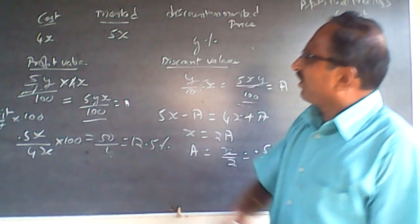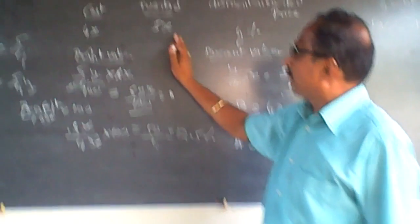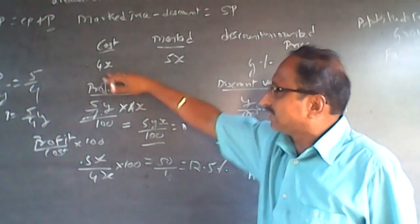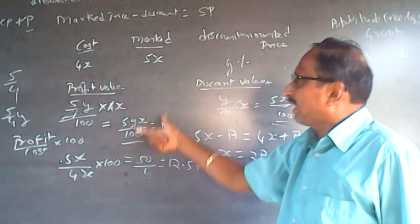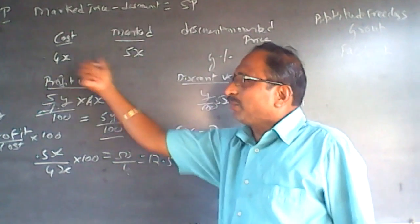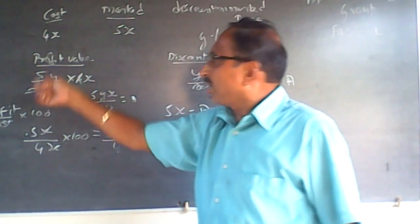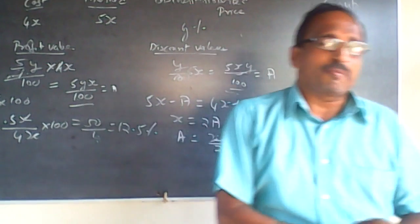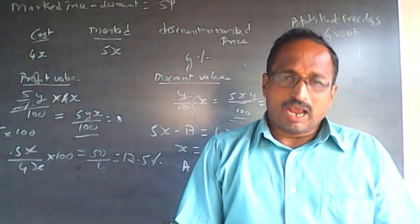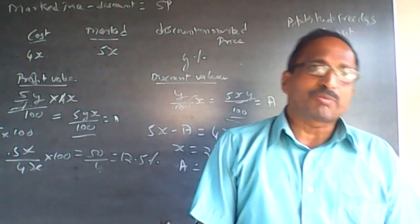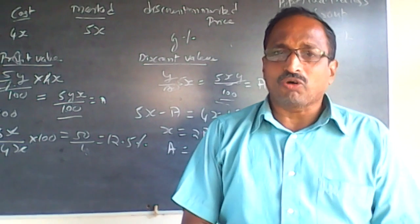You can also assign values — take mark price as 100 and cost price as 80. Then with 5xy calculations, equating both sides gives 10 and 10, so 10 divided by 80 into 100 equals 12.5%. Subscribe to my channel — I will be adding questions regularly, and you can also subscribe to my website to practice questions.